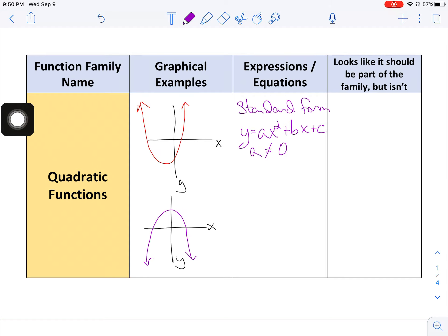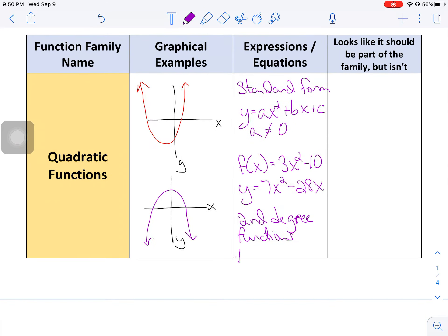So different examples of how this could look. You could have f of x is equal to 3x squared minus 10. Yeah, the middle term is missing, but it's okay that b equals zero. You just can't have a equal to zero. What else could that look like? Y equals 7x squared minus 28x. Now, the common thing that all expressions and equations for quadratic functions have, they are second degree functions. So second degree functions, the highest power on x, power or exponent on x is 2. So that's a second degree function.